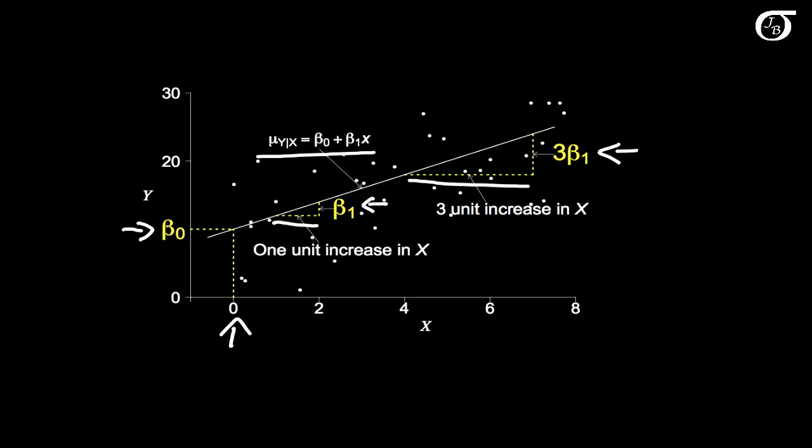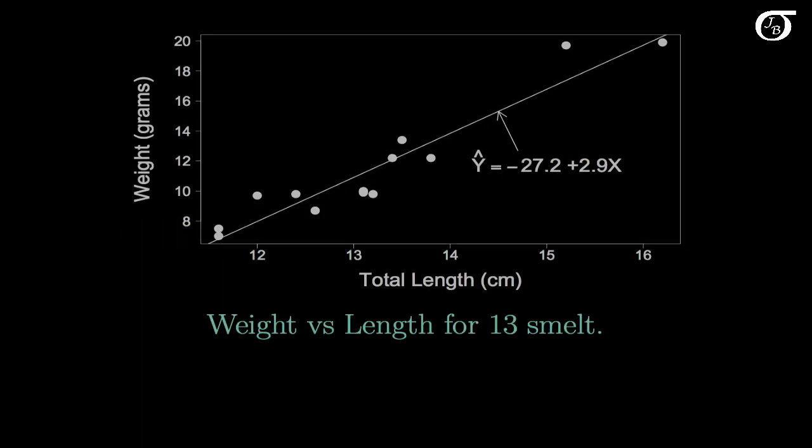Now we're not typically going to know the true value of these parameters in any given situation. We're going to get sample data and we're going to estimate beta0 and beta1. Here I've plotted in weight versus length for 13 smelt in a Finnish lake and plotted in the least squares regression line.